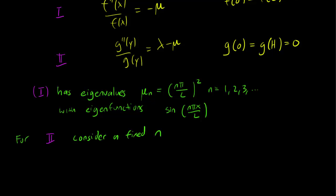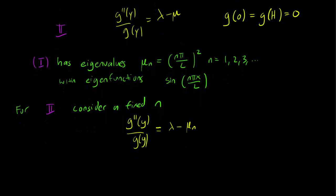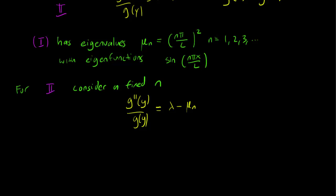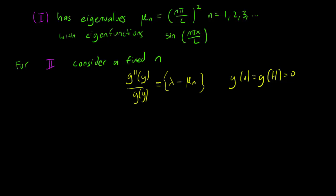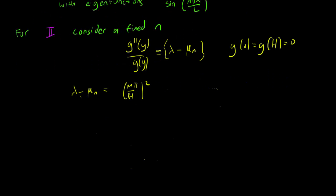So we fix the mu eigenvalue, and this leaves us with this equation, lambda minus mu_n. So mu_n is (nπ/L)², of course, it's a fixed number. And we can then try to solve this eigenvalue equation, of course, with this g(0) equals g(H) equals 0 boundary conditions. Now, if we imagine that this was just one constant, let's call it k, or whatever you want to call it,